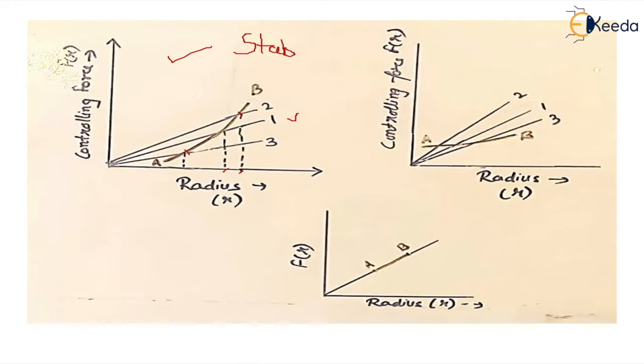Now if we see curve number 2, if we see this graph again, all the conditions remain the same - the controlling force on y-axis, radius on x-axis. Now you see the controlling curve is a bit different here.